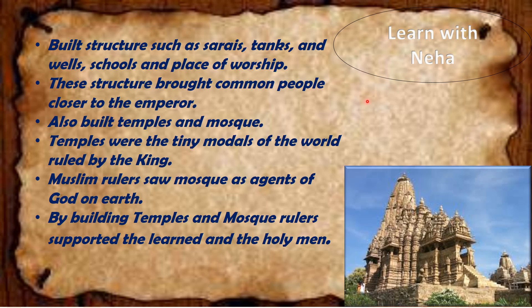Emperors were not only content with building large forts and palaces. They also built structures such as sarais, tanks, wells, schools, and places of worship. These structures brought common people closer to the emperor. They also built temples and mosques. Temples were tiny models of the world ruled by the king. Muslim rulers saw mosques as agents of God on earth. By building temples and mosques, rulers supported the learned and the holy men.